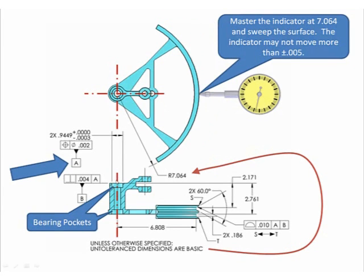You know the way the part functions, it would be rotating about the axis of the two bearing pockets. And when I do that, the indicator could not move more than plus 0.005 or minus 0.005, because with profile, the number in the box is always total and it's implied centered on the basic goal unless you're told otherwise.